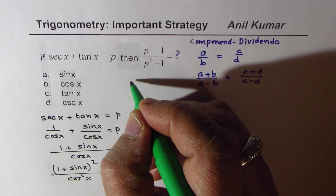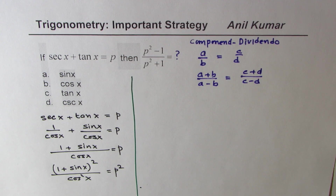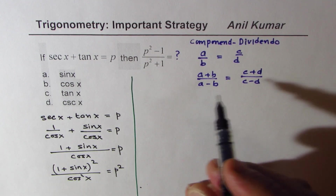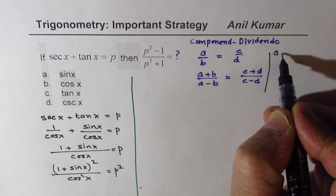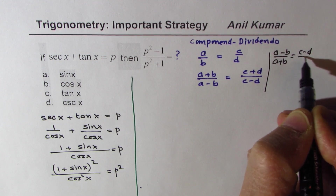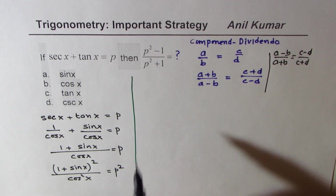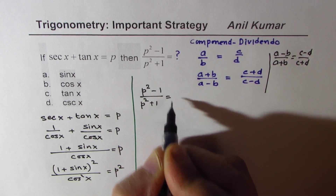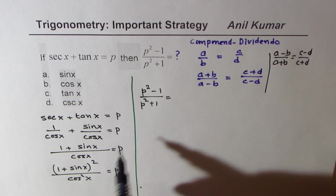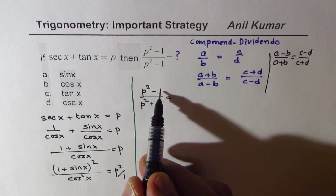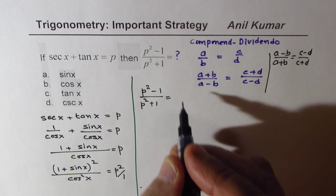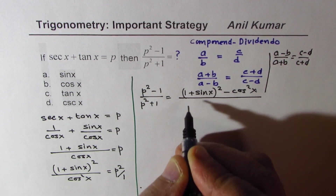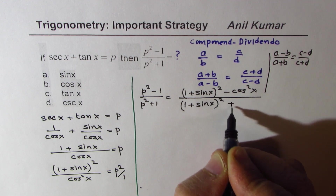Now, using componendo and dividendo, we can find what is p squared minus 1 divided by p squared plus 1. We apply the rule: p squared minus 1 over p squared plus 1 is equal to — from the numerator we subtract the denominator — so we get 1 plus sin x whole squared minus cos squared x over 1 plus sin x whole squared plus cos squared x.